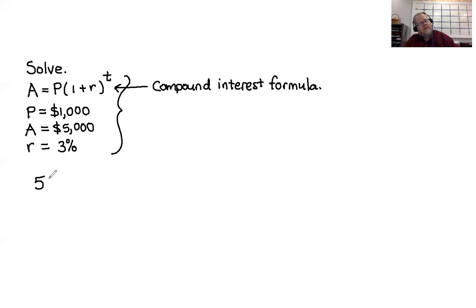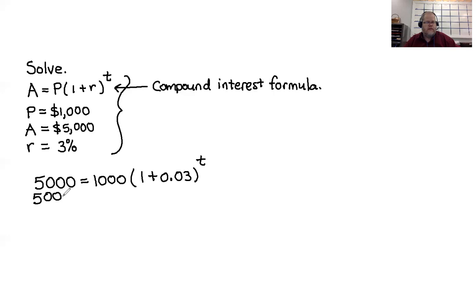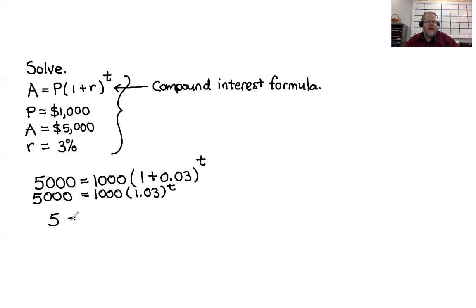We set up the equation replacing A with 5,000 and P with 1,000. One plus 3% is 1 plus 0.03, raised to the T. So we have 5,000 equals 1,000 times 1.03 to the T. Dividing both sides by 1,000 gives the exponential equation: 5 equals 1.03 to the T. We're going to use a logarithm to solve this.